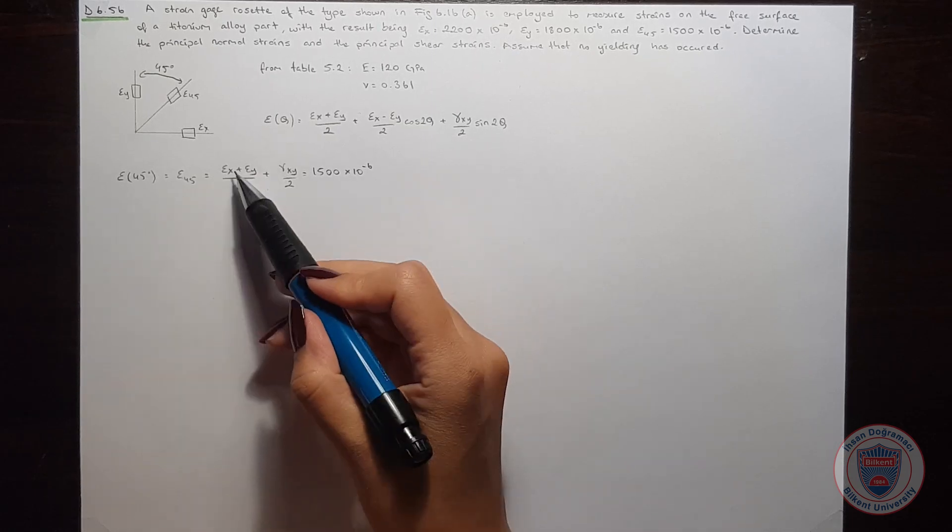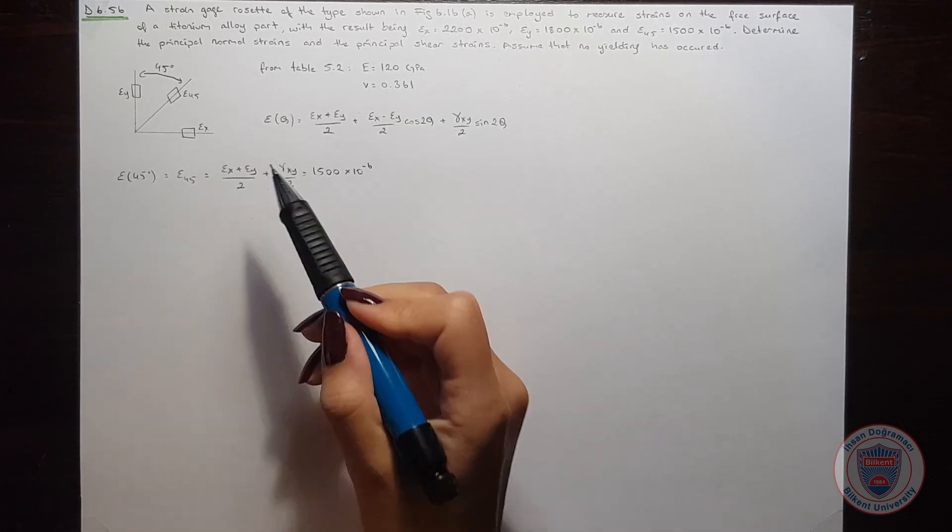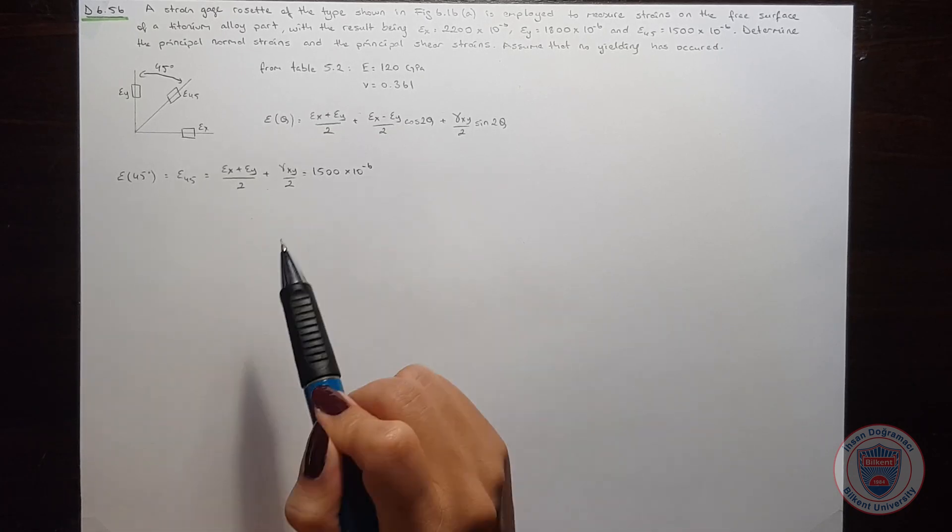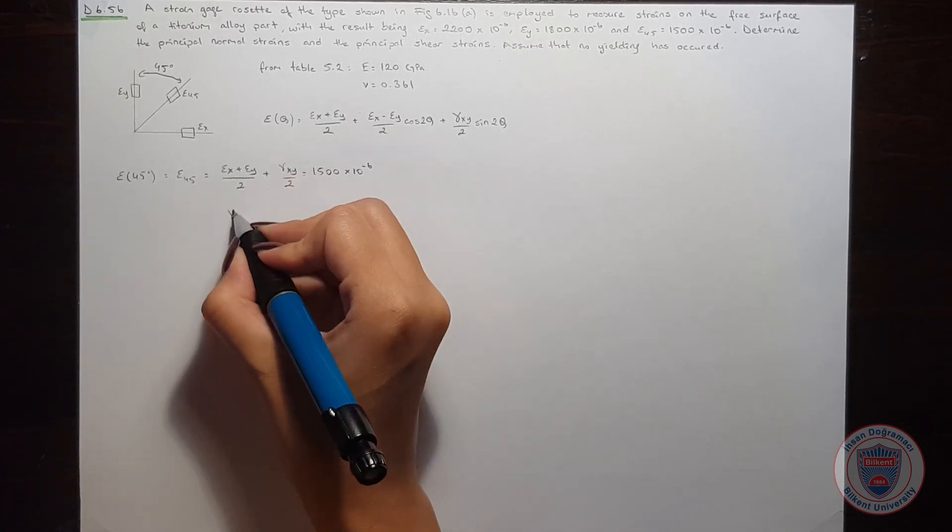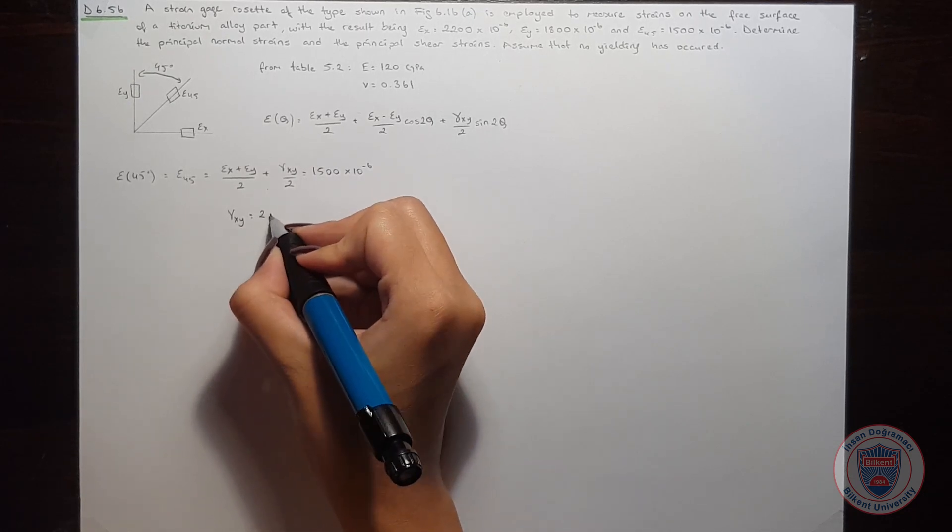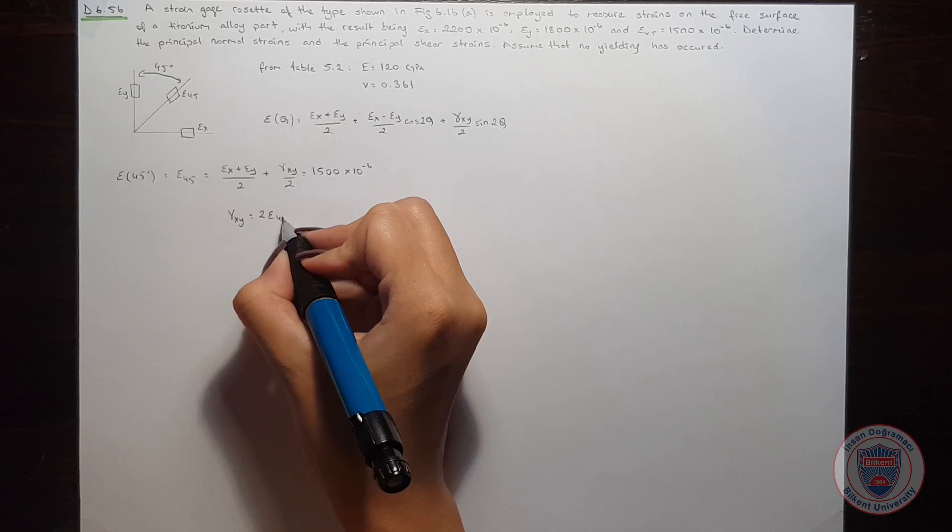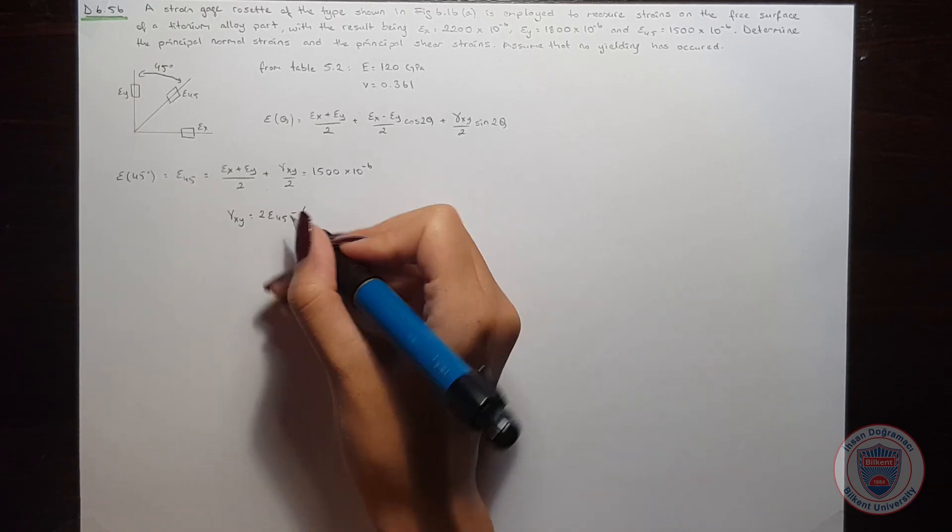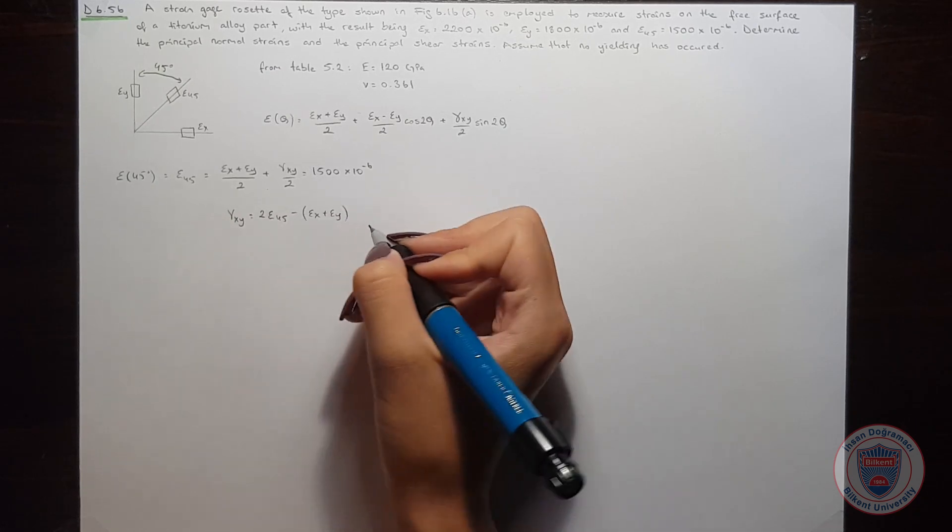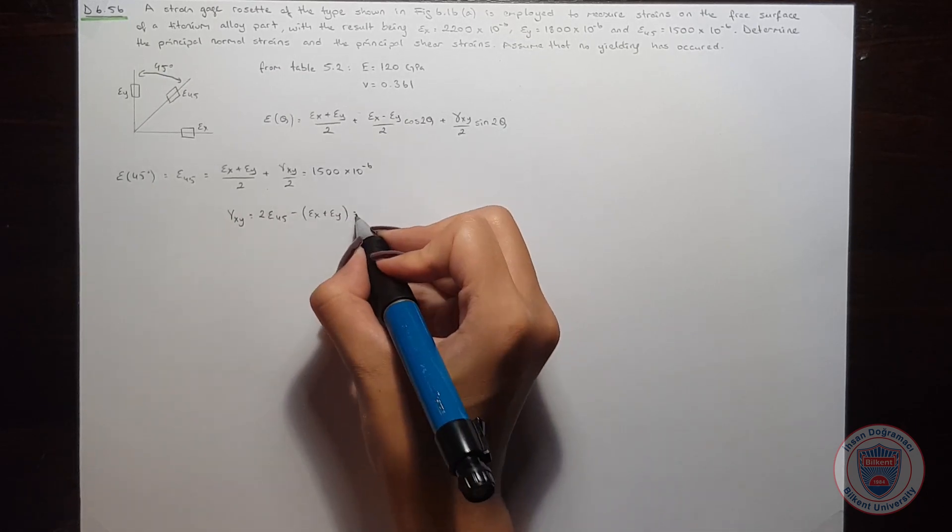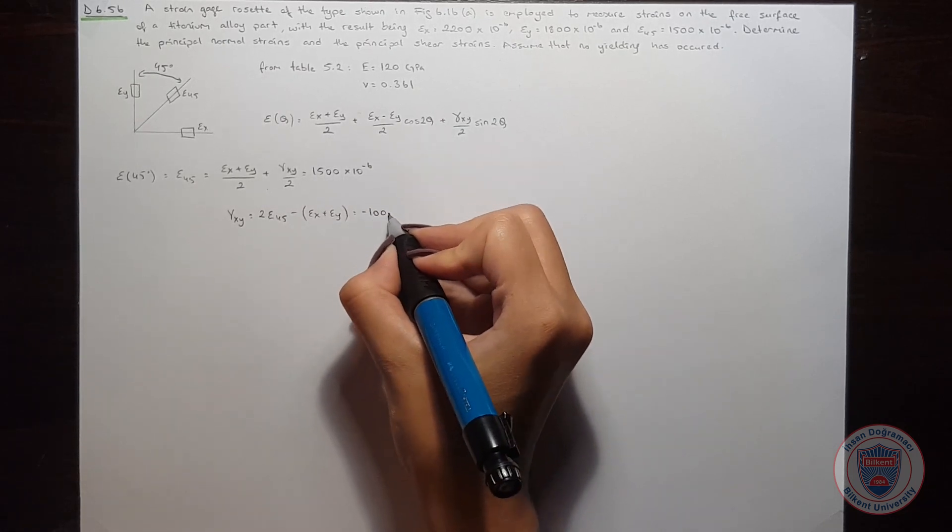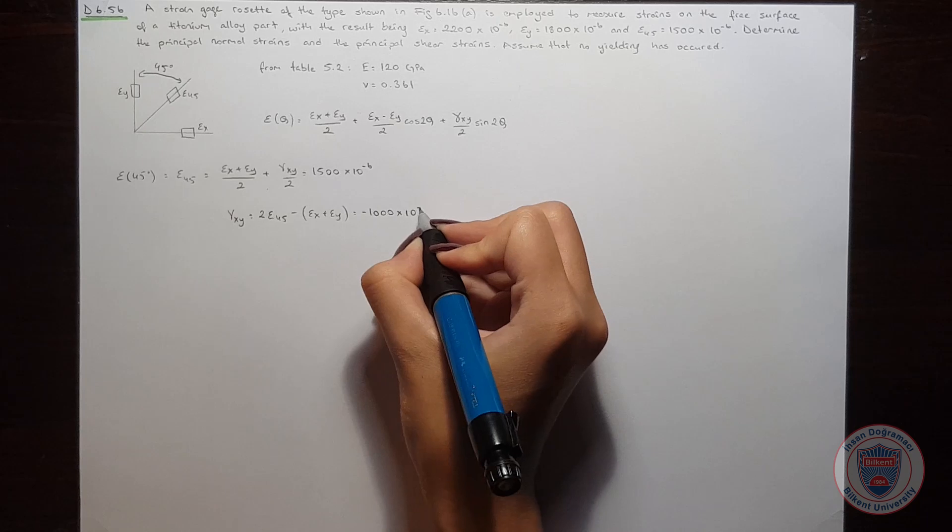Since we already know epsilon x and epsilon y, we can have an equation for gamma xy from this formula. So we will get gamma xy is equal to 2 times epsilon 45 minus epsilon x plus epsilon y. And this will be equal to minus 1000 times 10 to the power of minus 6.